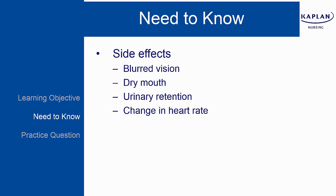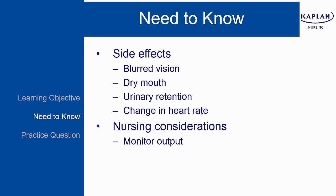We use atropine for patients with a very slow heart rate, as atropine will increase the client's heart rate. Important nursing considerations include monitoring your client's urinary output, as they are at risk for urinary retention. Remember that anticholinergics are contraindicated if your client has a diagnosis of glaucoma. Other contraindications include any history of hypersensitivity or tachycardia due to thyrotoxicosis or cardiac insufficiency. Use special caution if the client has urinary tract pathology or is at risk for a GI obstruction.